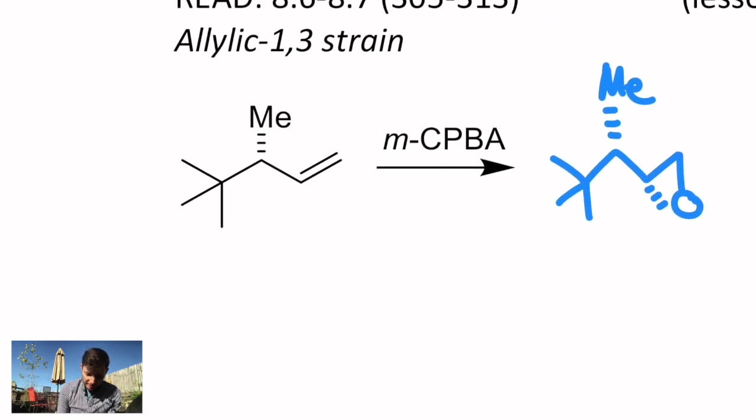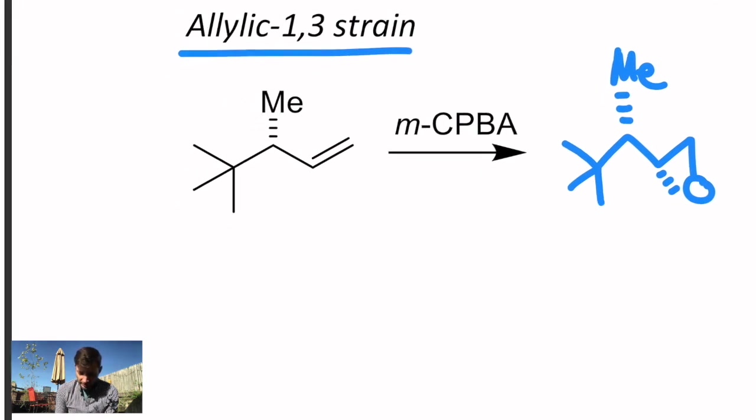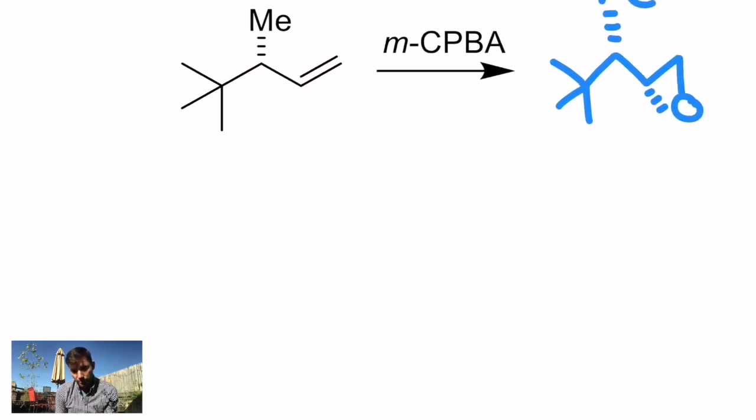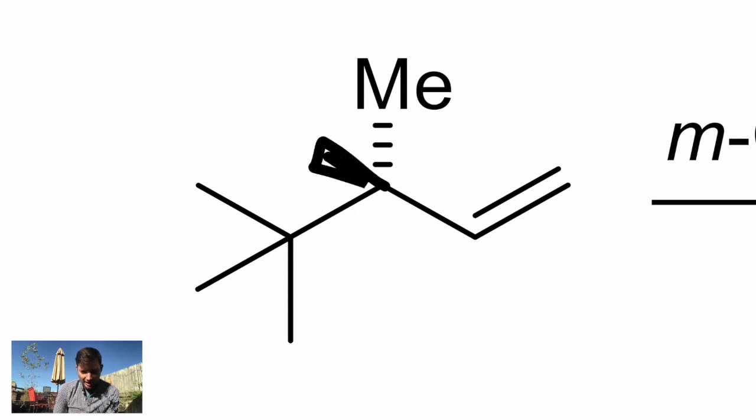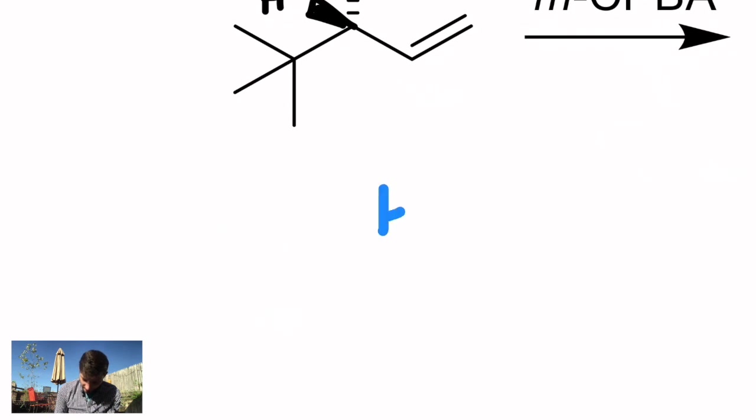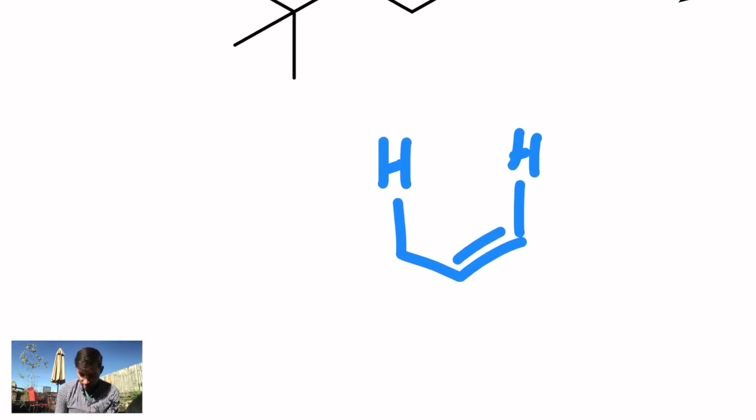We can explain this with a phenomenon known as allylic 1,3 strain, minimizing allylic 1,3 strain. To illustrate that, I'm going to redraw this molecule where I rotate around that carbon-carbon bond and specifically point out where this allylic hydrogen prefers to be. It's all about that spot and the fact that it's allylic, which remember is one away from the alkene.